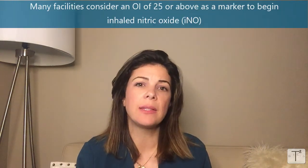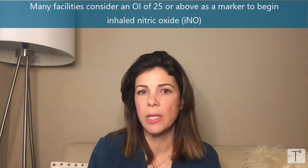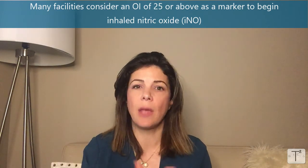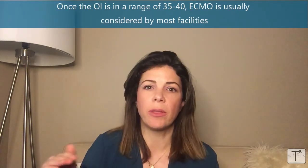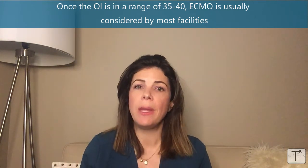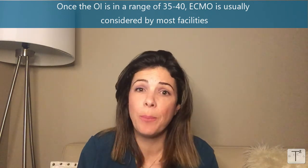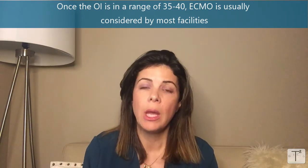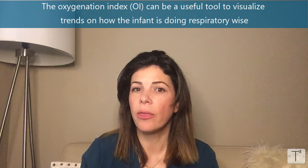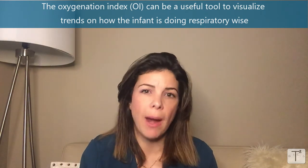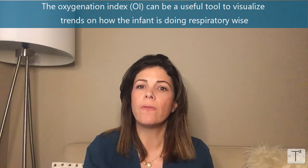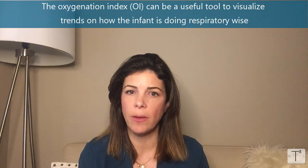Many centers use an OI of 25 or above as the threshold to start inhaled nitric oxide (iNO). Once the OI creeps up to 35 or 40, the baby should be in a center where ECMO is available and it should be actively considered. Even when OIs aren't that high, it's a useful parameter to follow the overall trend of how the baby is doing.